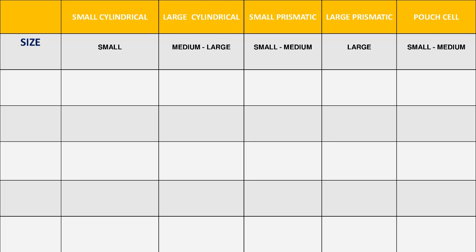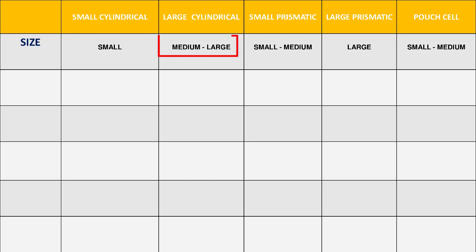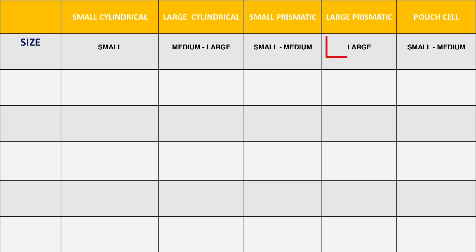Let's see the size. For the small cylindrical cell, as per the name, the size is small. For the large cylindrical cell, the size is medium to large. For the small prismatic cell, the size is small to medium, and for the large prismatic cell, the size is large. For the pouch cell, the size is small to medium.